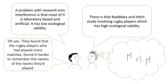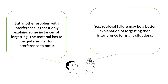A problem with research into interference is that most of it is laboratory based and artificial, so it has low ecological validity. However, there is one study which does have high ecological validity, carried out by Baddeley and Hitch, which involved rugby players. They found that rugby players who had played more matches found it harder to remember the names of the teams they played, showing interference. Another problem is that interference only explains some instances of forgetting — the material has to be quite similar for interference to occur. So retrieval failure, which is another explanation of forgetting, may be better able to explain forgetting in more situations.